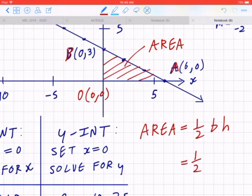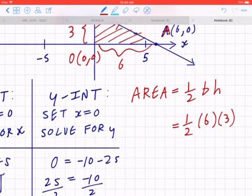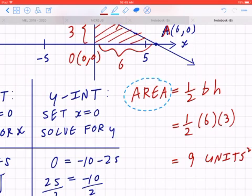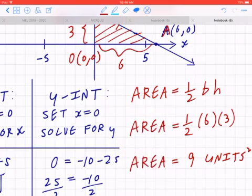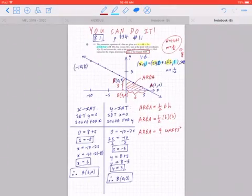So the base is going to be 6, the height is going to be 3, so it's going to be half times 6 times 3. When you work this out, that's going to be 9 units squared. And that's how you find the area of triangle AOB. I hope this makes sense.